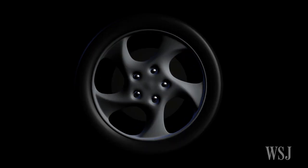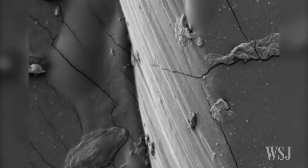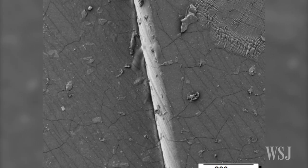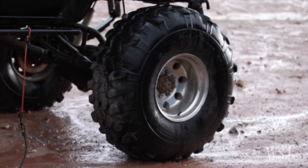Modern car tires consist of long strand-like molecules that are tangled and cross-linked. Manufacturers add sulfur to the rubber to give it durability while also maintaining elasticity. This process is called vulcanization.